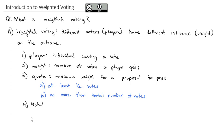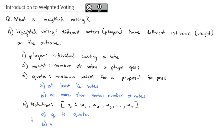There's notation we're going to use to represent a weighted voting system. In brackets we have Q, then a colon, followed by W1, W2, W3, and so on to the last weight WN. In that notation, Q is the amount of votes needed for quota, W1 is the weight of player one, W2 is the weight of player two, et cetera.